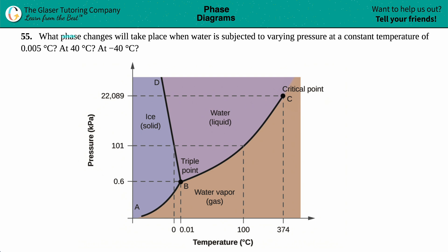Number 55. What phase changes will take place when water is subjected to varying pressure at a constant temperature of 0.005 degrees Celsius, and then we have to do it again at 40 degrees Celsius and at negative 40 degrees Celsius? So it looks like there's three different questions here. Let's find out what phase changes will occur at the first temperature.